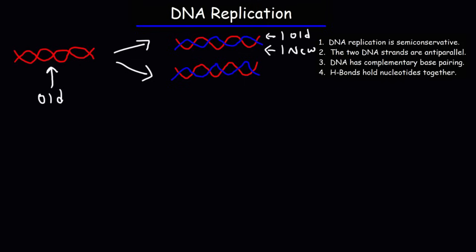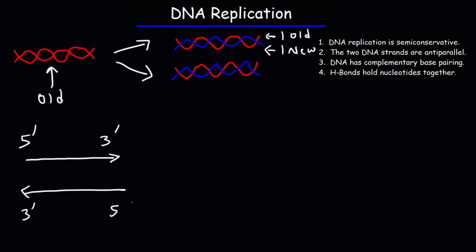Number two: the two DNA strands are anti-parallel. This means that they run in opposite directions. From left to right, one of the strands runs in the 5' to 3' direction and the other goes in a 3' to 5' direction.